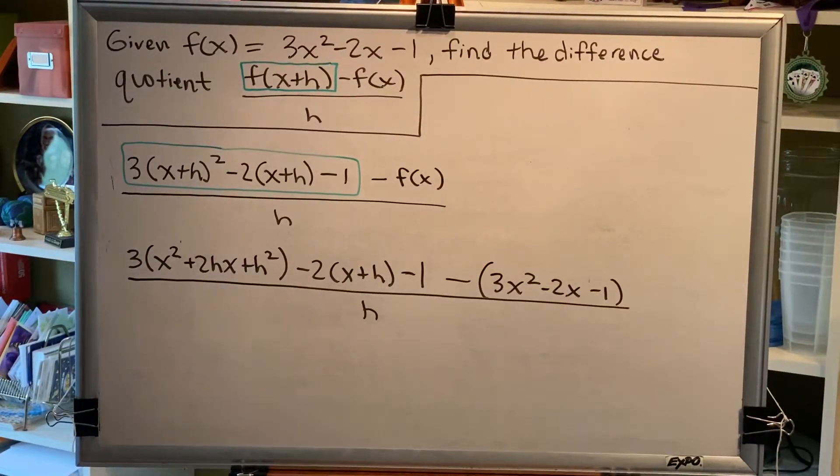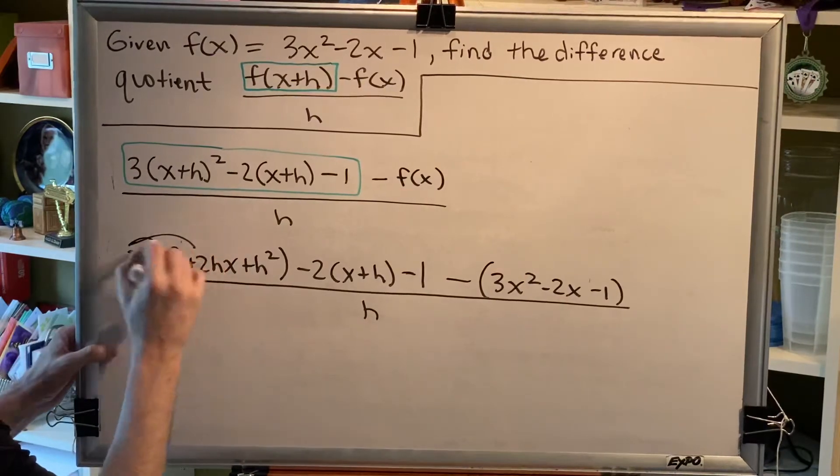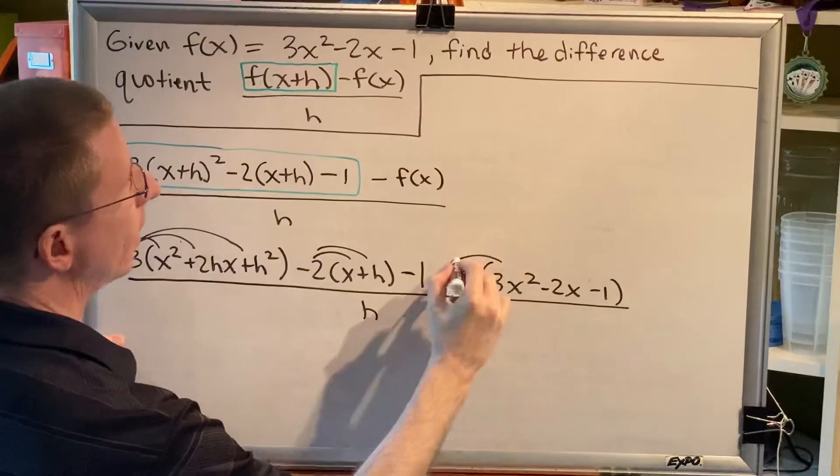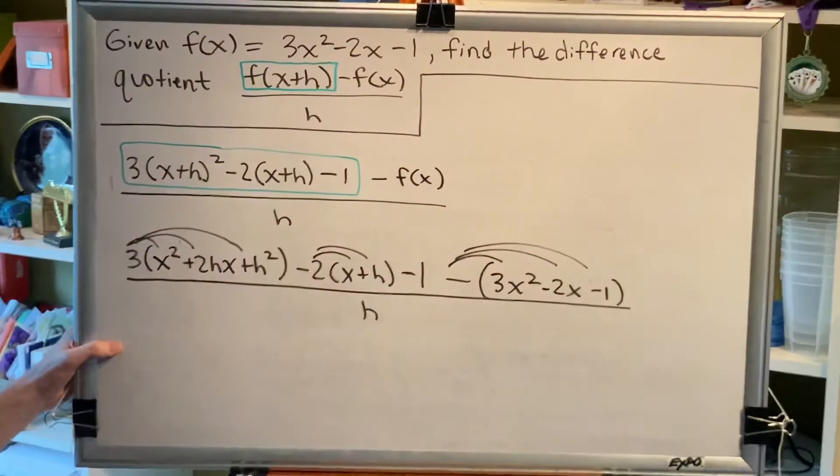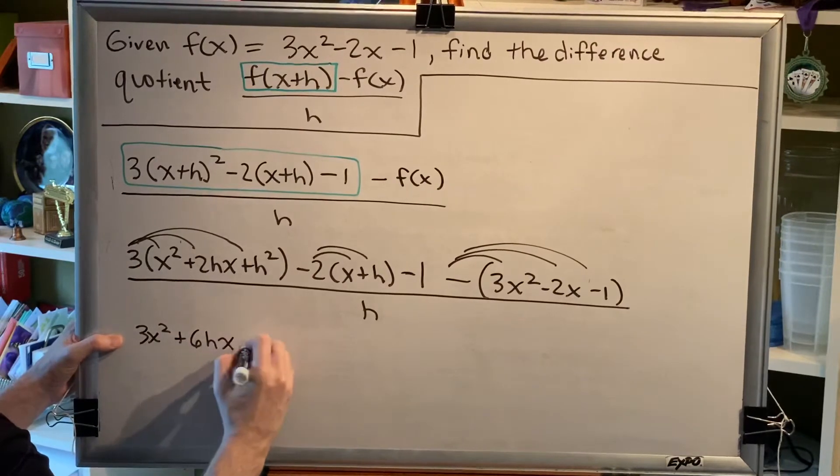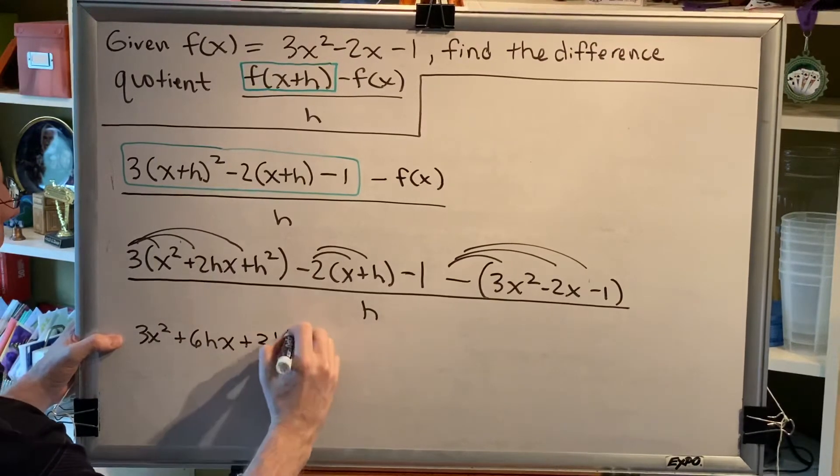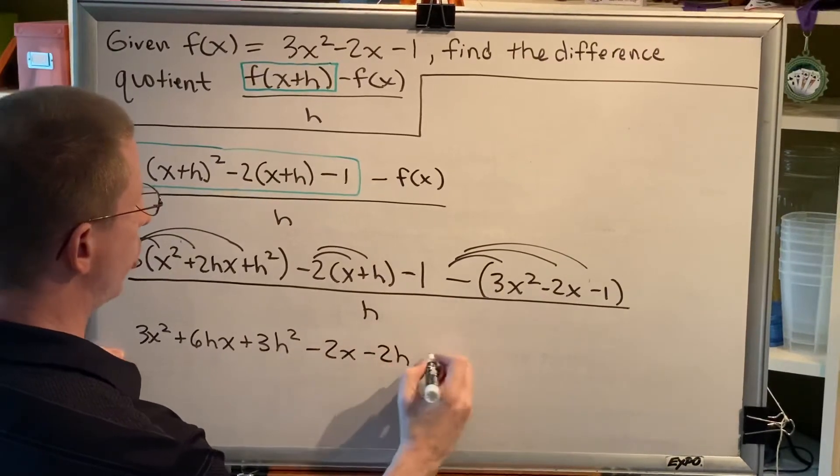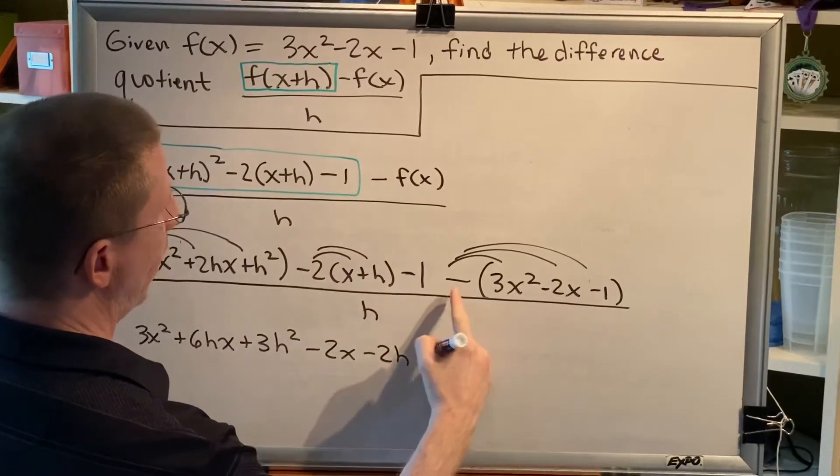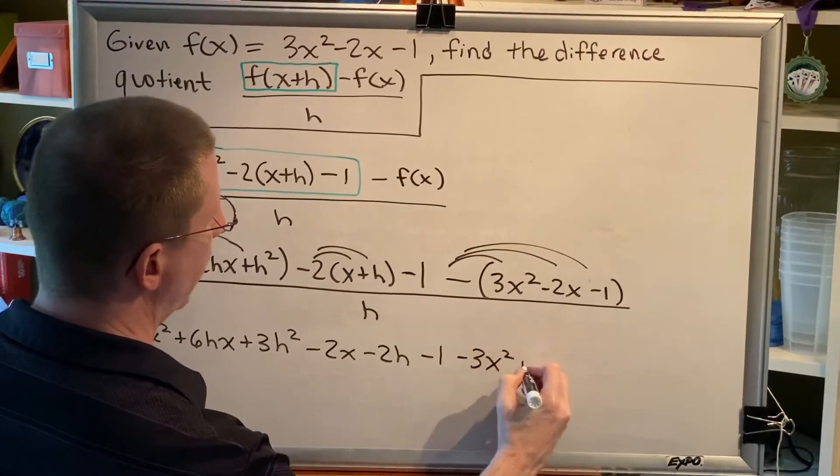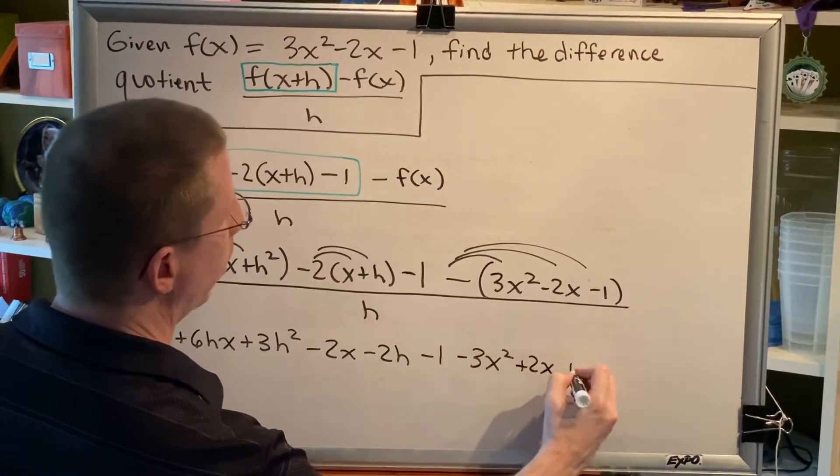Now we're going to do some distributing. Here, here, and here. So we're going to get 3x squared plus 6hx plus 3h squared minus 2x minus 2h minus 1. And distributing this negative, minus 3x squared plus 2x plus 1.